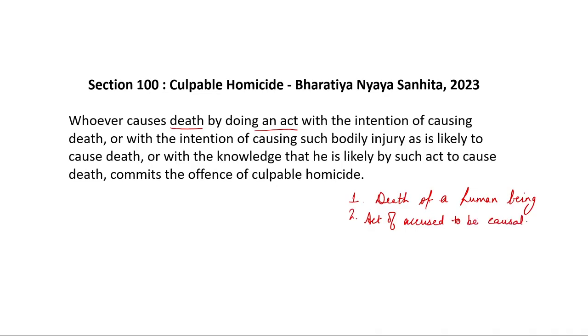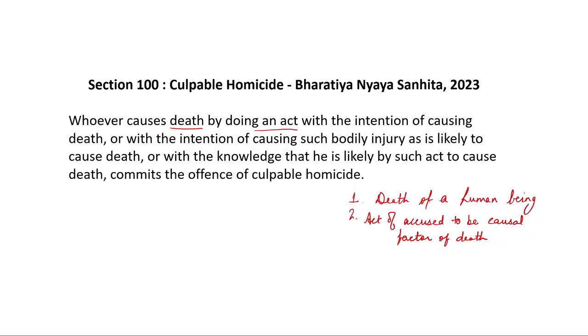It should be the principal reason behind the death, the causal factor of death. For the purposes of understanding section 100, we will hypothetically divide section 100 into three constituent parts. This is required in order to understand the gravity of culpable homicide, because later on you will understand when we move from culpable homicide to murder why this kind of a hypothetical distinction is important. Whoever causes death by doing an act with the intention of causing death — first, this would be 299.1, intention of causing death. Second would be intention of causing such bodily injury as is likely to cause death. And then third would be with the knowledge that he is likely by such act to cause death — commits the offence of culpable homicide.